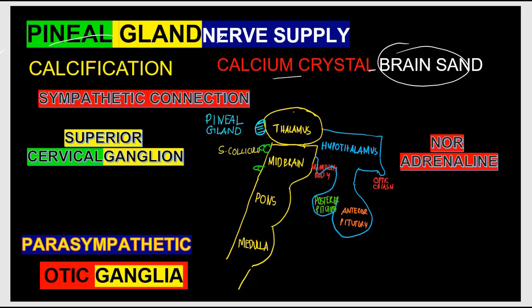The nerve supply of the pineal gland includes a sympathetic connection: the superior cervical ganglion connects to the pineal gland and releases noradrenaline at nerve endings, promoting the synthesis of melatonin. There is also a parasympathetic connection from the otic ganglia.